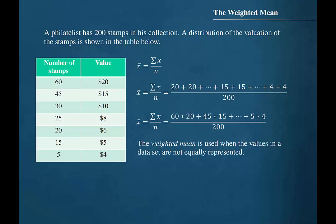When we do this, we are finding what is called the weighted mean. The weighted mean is used when the values in a data set are not equally represented.